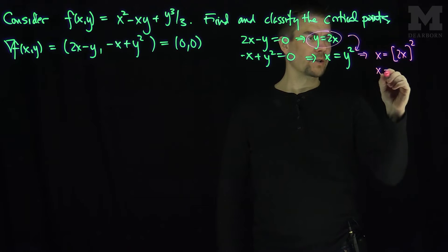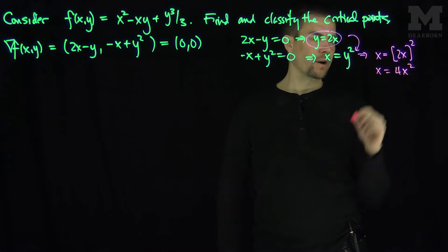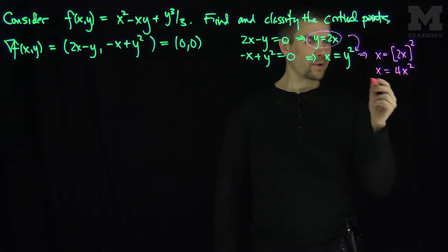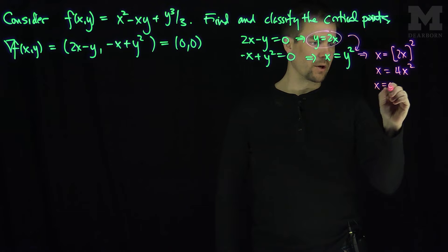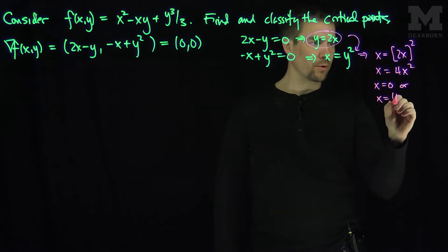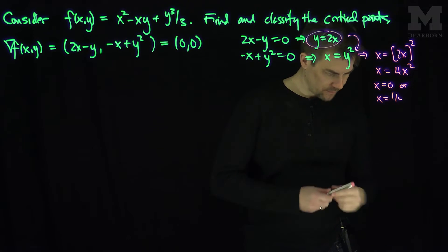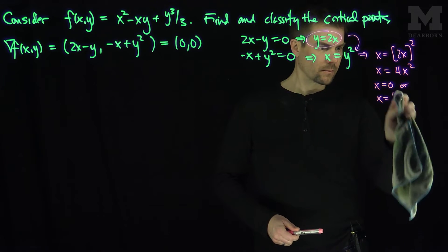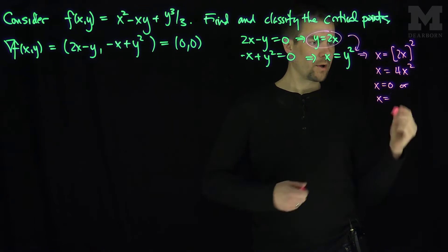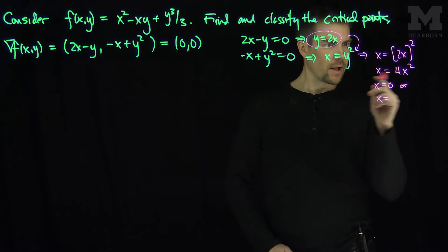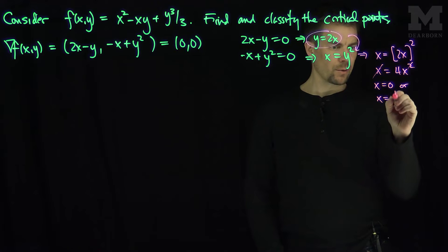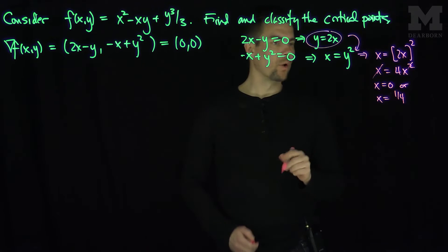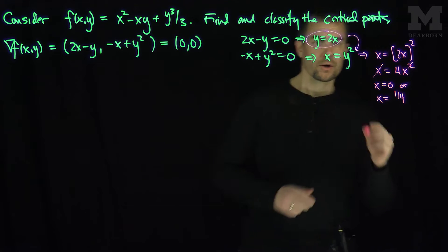Therefore x = 4x², and we can conclude either x = 0, or by canceling an x we get 4x = 1, so x = 1/4. So we have x = 0 or x = 1/4.